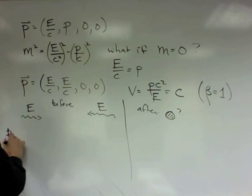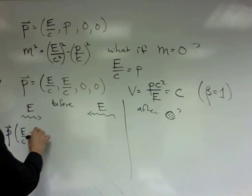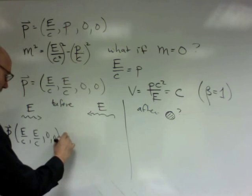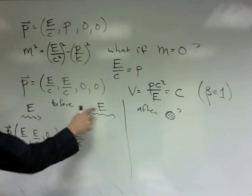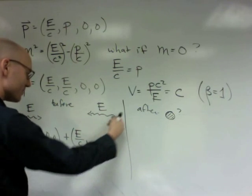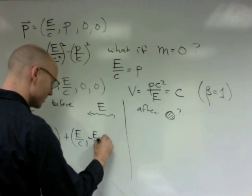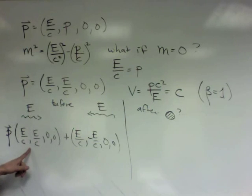This has four momentum E over C, E over C, because it's moving in the x direction, zero, zero. This has four momentum, well, its energy is also E over C. They have the same energy by assumption. But now it's moving in the negative x direction, so this is negative E over C, zero, zero.